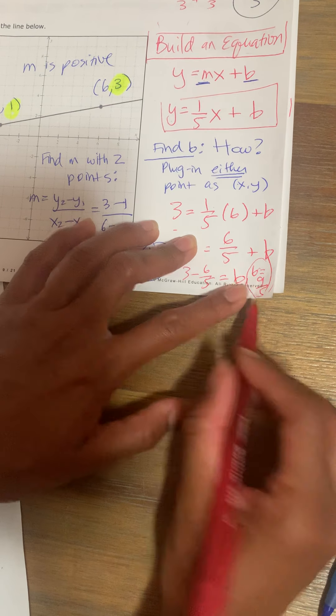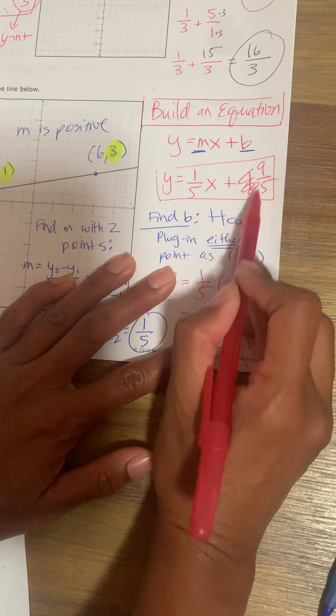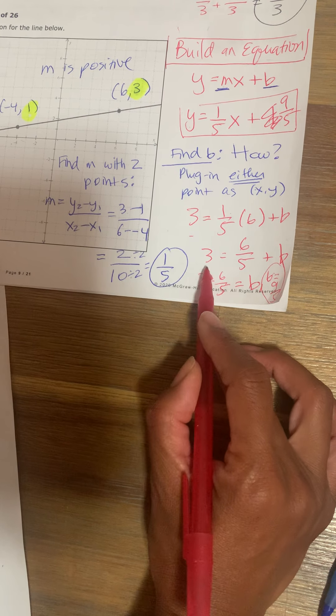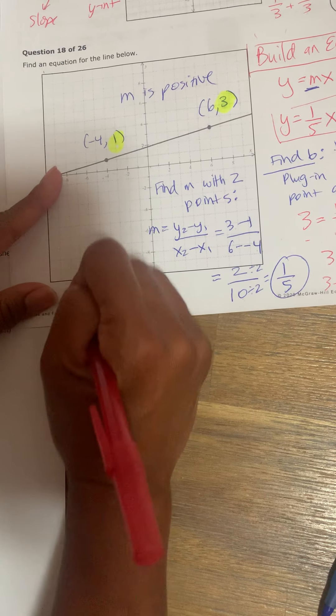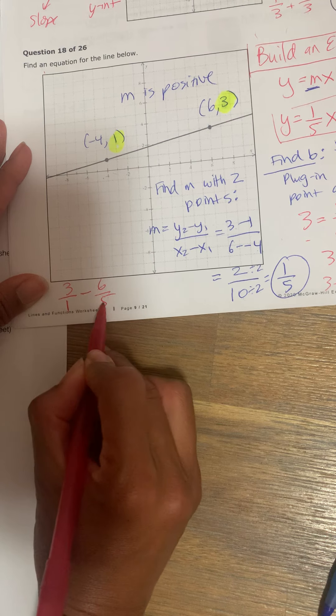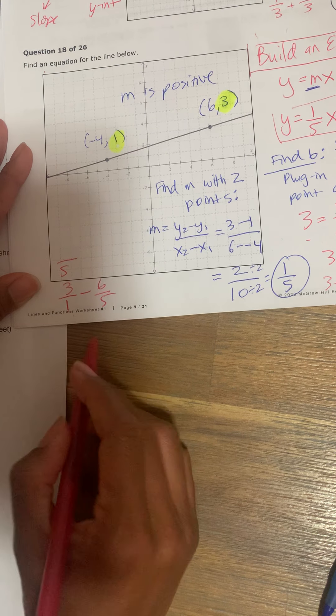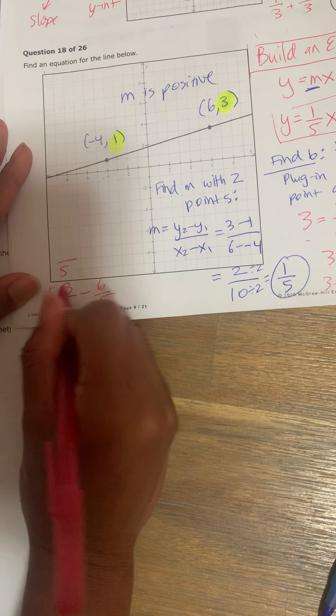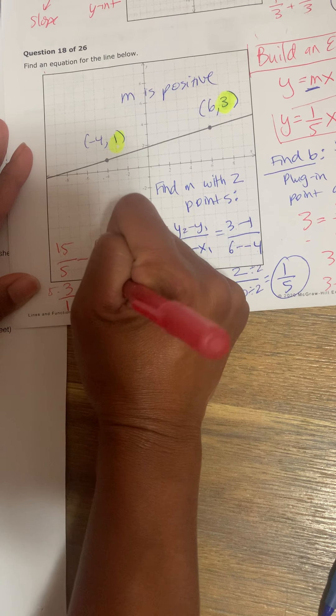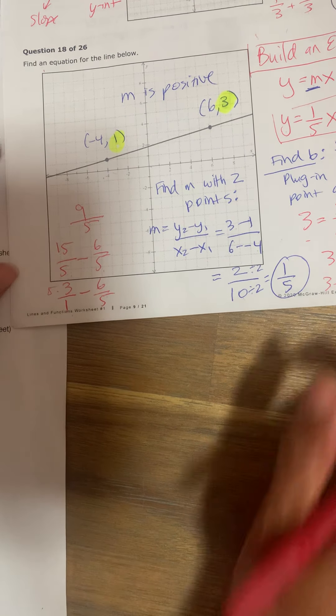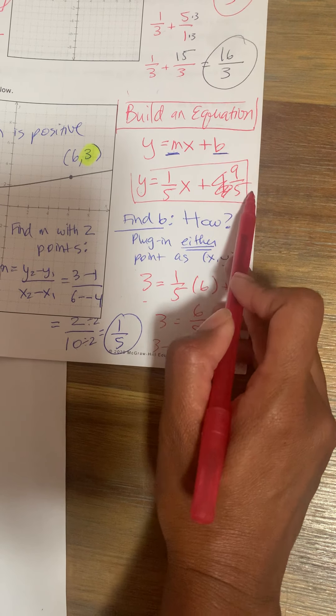So this becomes my answer for the problem: y equals 1 fifth x plus 9 over 5. This is building an equation. If you don't have a calculator, if you don't want to use one, 3 minus 6 fifths, I just want to show you how you get 9 fifths. 3, you can write as a fraction, 3 over 1 minus 6 over 5. You need a lowest common denominator. Lowest common denominator is 5. If you change the 1 to 5, you also need to change the 3. Multiply that by 5, and that will give you 15. So 15 over 5 minus 6 fifths. Same denominator. Keep the denominator the same. 15 minus 6 is 9. So 9 fifths. Your answer is y equals 1 fifth x plus 9 fifths.